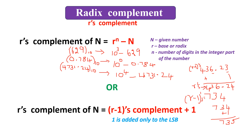To summarize: if there is only an integer part, add 1 to the least significant bit of the integer part. If both integer and fraction parts are present, then 1 should be added to the least significant bit of the fraction part.